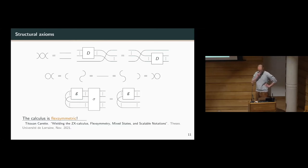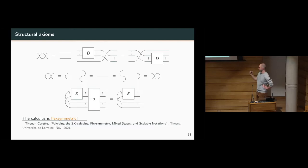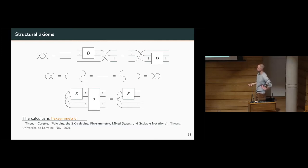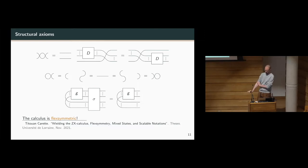On to axiomatisation. We first have structural axioms covering the usual rules for swapping wires and diagrams through wires, cup and cap rules, string-pulling equations, and so on. Then there is what Titouin called flex symmetry: if you take any generator G other than the swap and turn it into a state, applying any permutation sigma in terms of swaps should leave the state invariant. This rule is enough to recover the 'only connectivity matters' meta-rule and allows us to treat our diagrams as graphs.